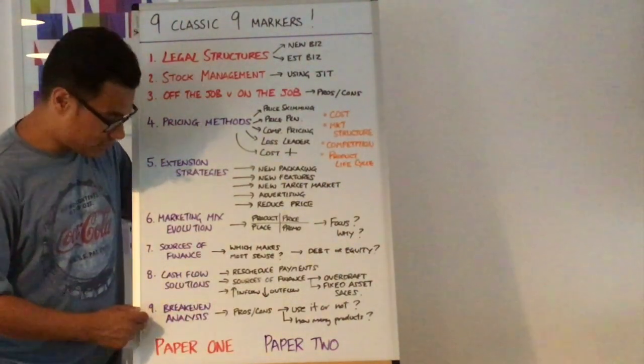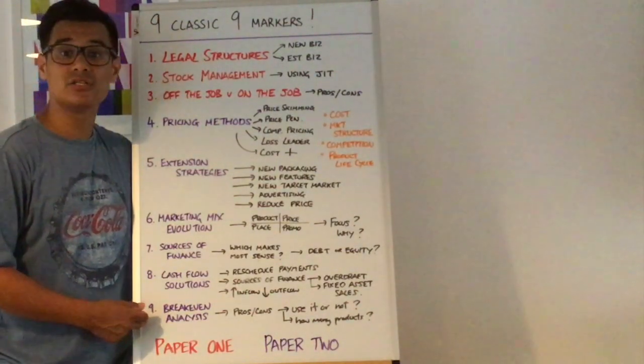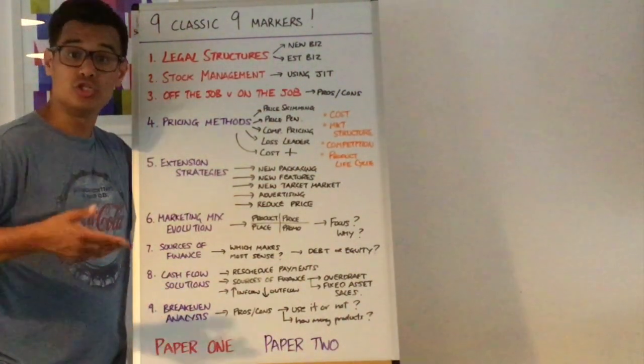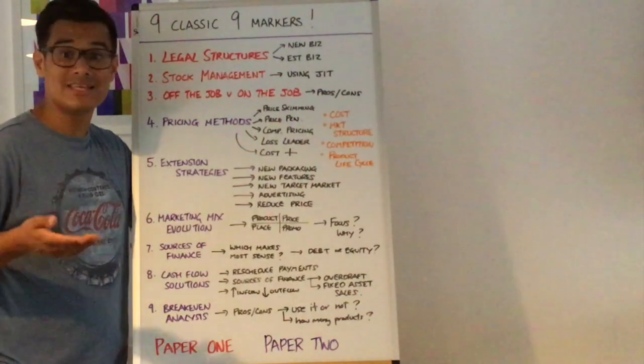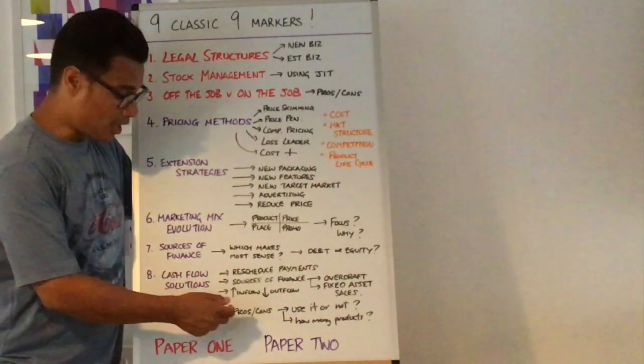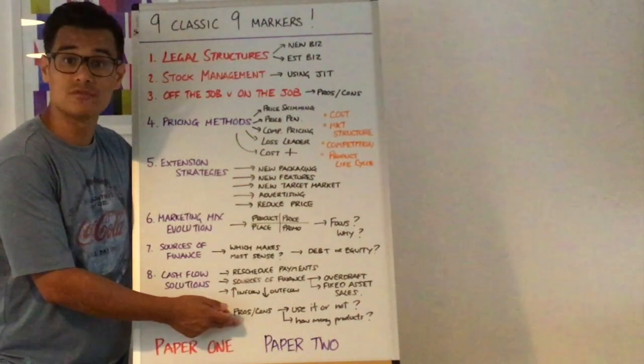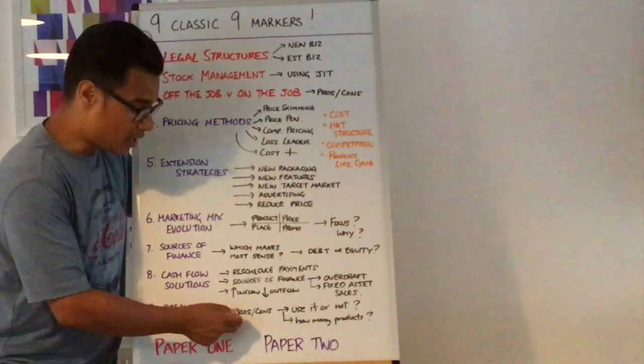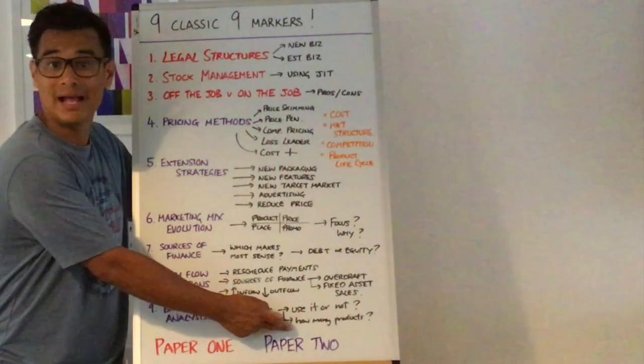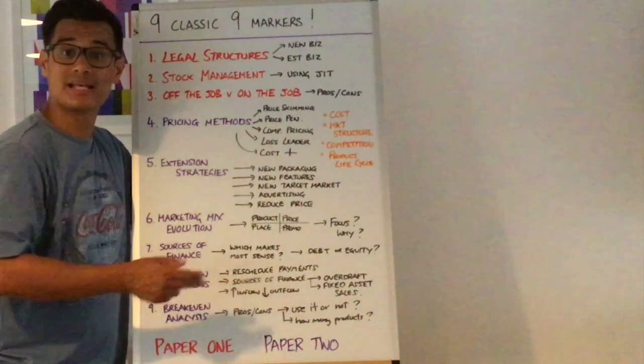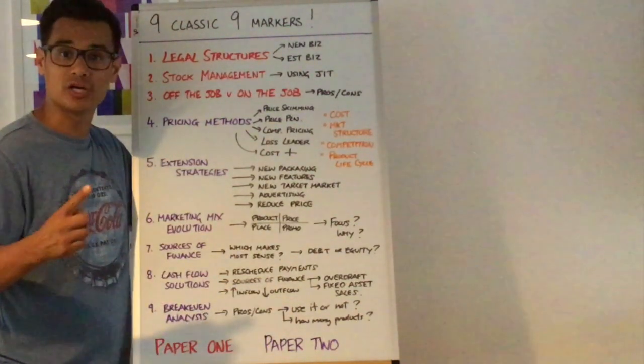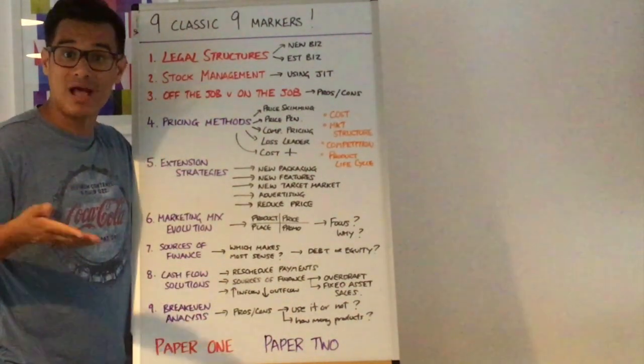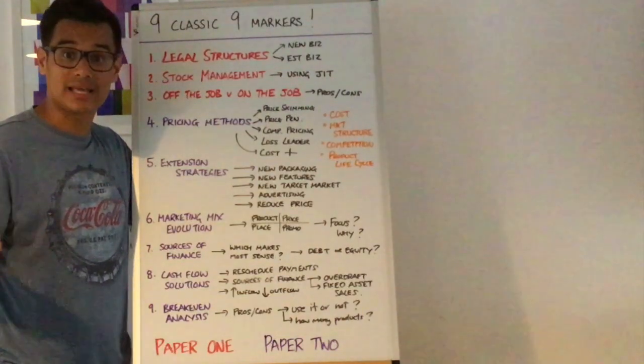Number nine, break-even analysis. So break-even analysis you want to be looking at whether a firm should use break-even analysis or not. Is there a point to using it? So you basically look at the pros and cons of break-even analysis but actually one angle that you go down is break-even analysis suits probably just one product so how many products do they sell? How does it say in the case study?